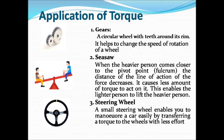Applications of torque: a gear is a circular wheel with teeth around its rim that helps change the speed of rotation. In a seesaw, a lighter person can lift a heavier person when the heavier person moves closer to the pivot — this reduces the torque. A small steering wheel enables maneuvering a car easily by transferring torque to the wheel with less effort.